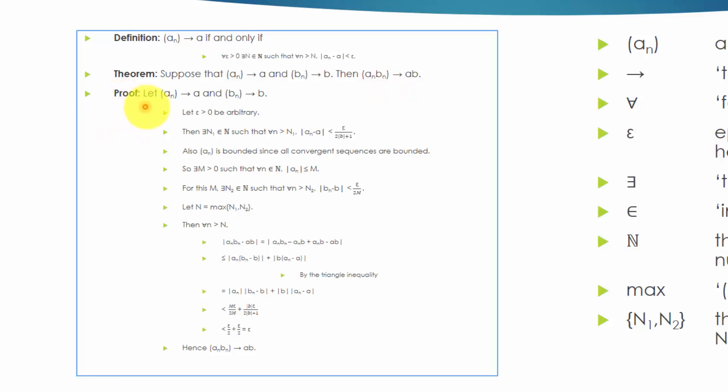Proof: Let a sequence A-N converge to A, and a sequence B-N converge to B. Let a variable epsilon greater than 0 be arbitrary.